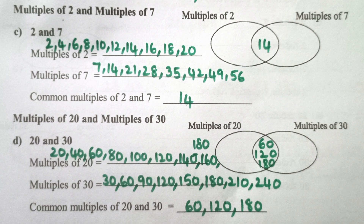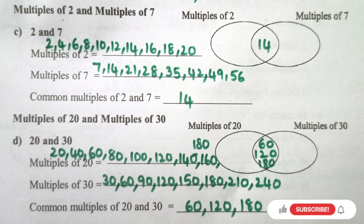Multiples of 2 and 7. Multiples of 2: 2, 4, 6, 8, 10, 12, 14, 16, 18, 20.